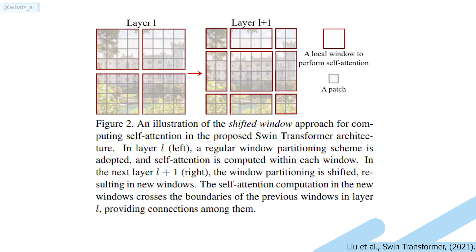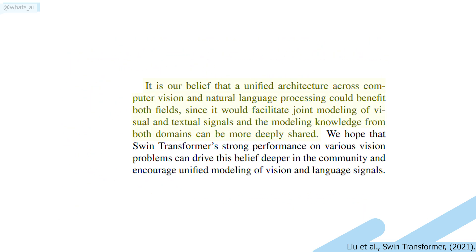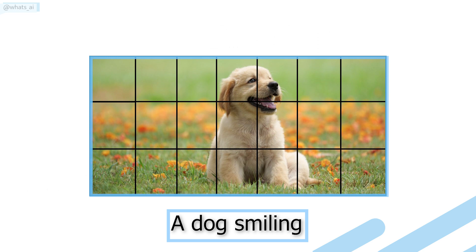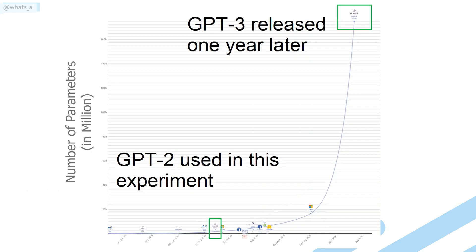The shifted window technique allows long-range pixel relations to appear. Unfortunately, these long-range relations only appear with neighboring windows, losing very long-range relations — showing there is still room for improvement. As the paper states: "It is our belief that a unified architecture across computer vision and natural language processing could benefit both fields, since it would facilitate joint modeling of visual and textual signals." Transformers are still highly data-dependent, but this is undoubtedly a significant step forward for both fields.